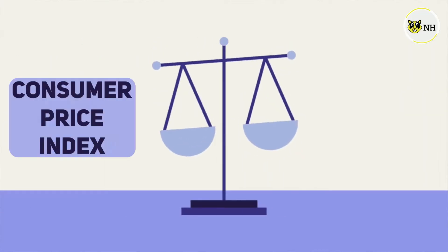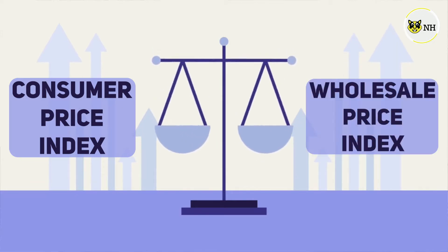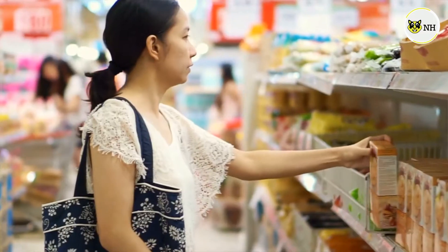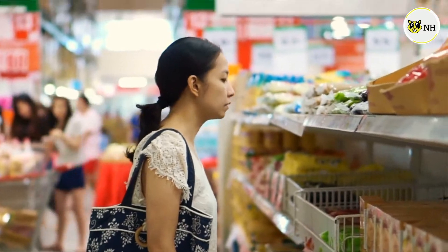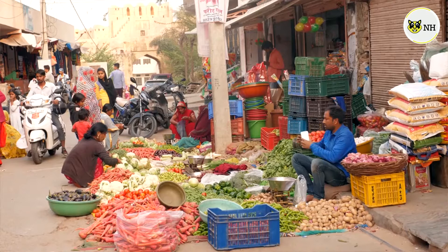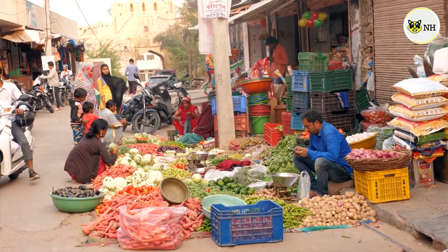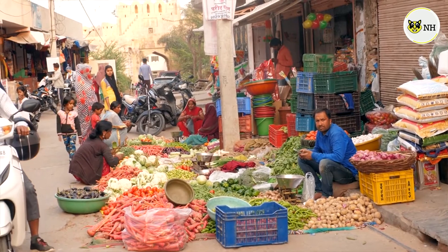The inflation rate is usually measured with the help of two indices. One is the Consumer Price Index and the other is the Wholesale Price Index. The Consumer Price Index looks at inflation from the point of view of the consumer — you and I, a common person buying a biscuit packet for himself and his family. On the other hand, the Wholesale Price Index calculates inflation from the point of view of wholesalers who sell, say, 100 or 200 biscuit packets a day. With the help of these two, the idea of inflation is calculated.